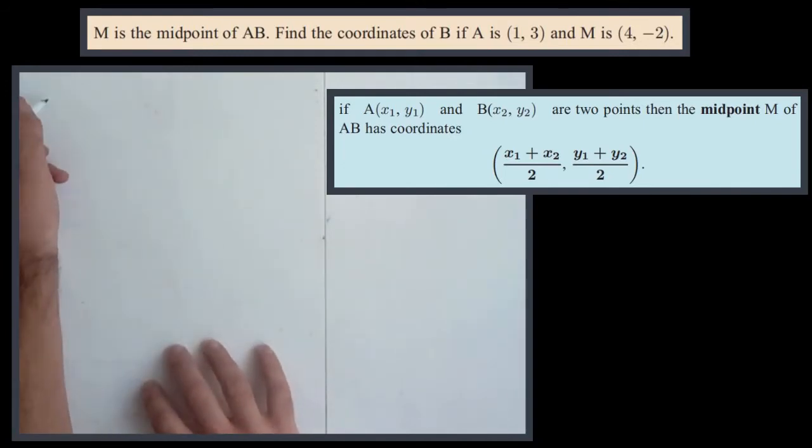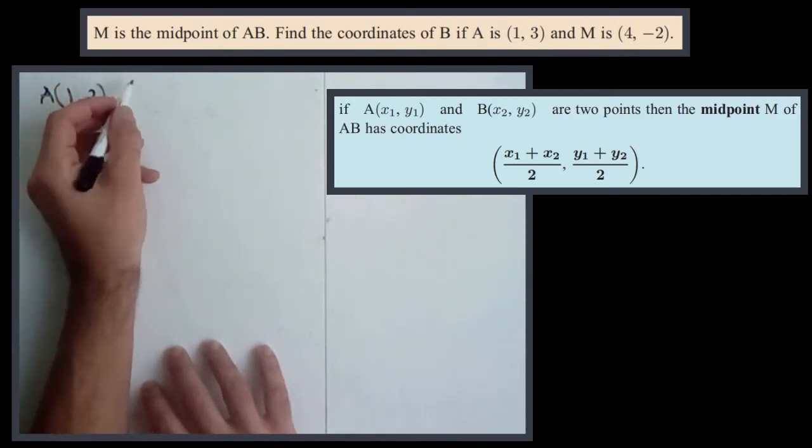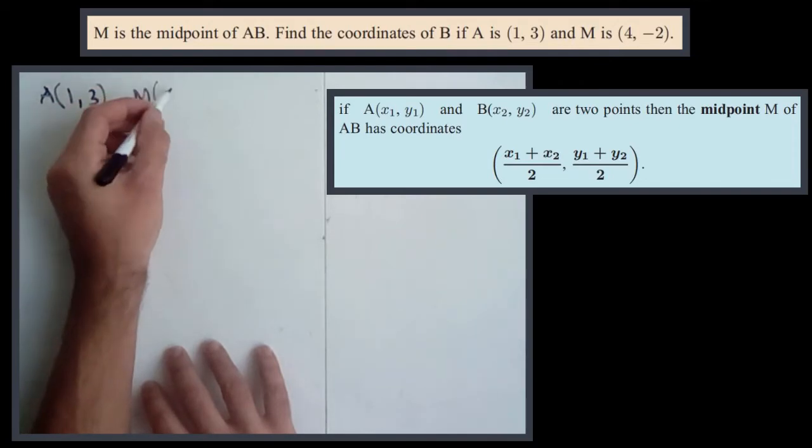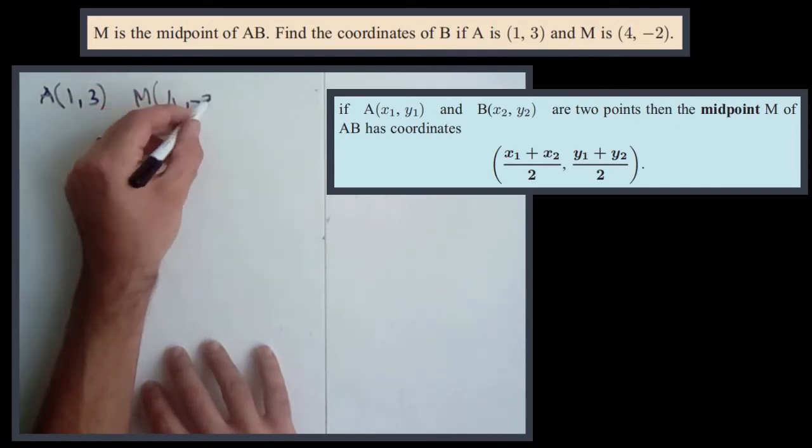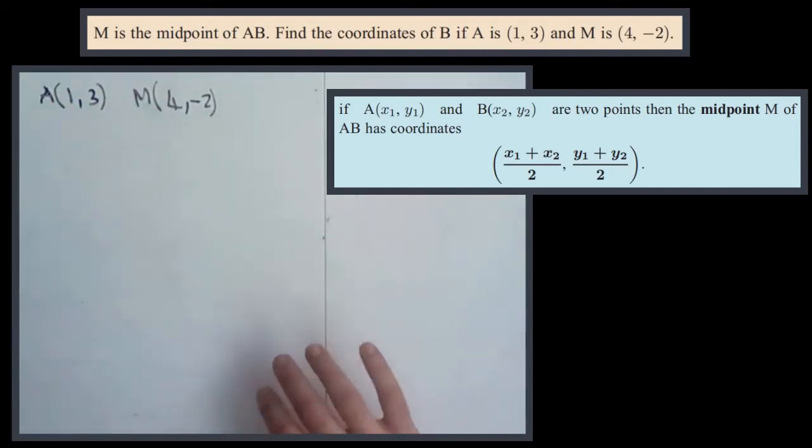I'm going to do this using a formula and I'll show you another approach in a different video. So let's write down what we know. We have A at (1,3), we have M which is the midpoint at (4,-2), and then we've got point B that we don't know.